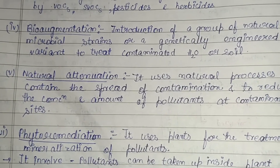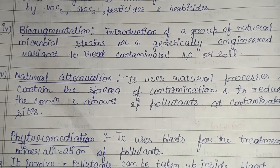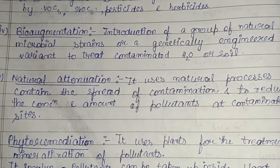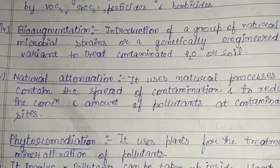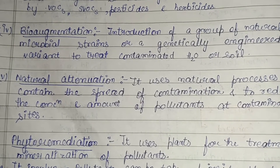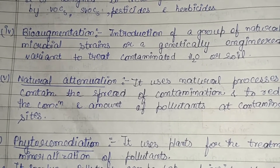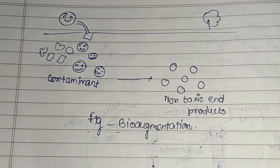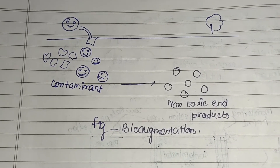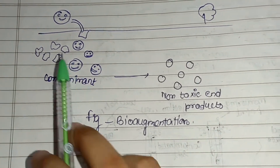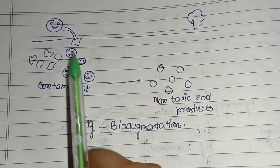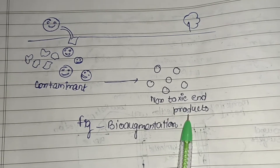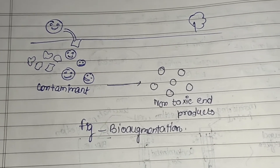Bioaugmentation involves the introduction of a group of natural microbial strains or genetically engineered variants to treat contaminated water or soil. Whether natural or genetically engineered microorganisms are applied, there is a better chance of treating the contaminated material. In the diagram, contaminants are present, then natural or genetically modified microorganisms are added, converting contaminants into non-toxic end products beneath or on the ground surface.